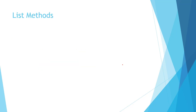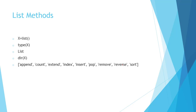Next, we will see list methods. There are different types of methods available in the list. To check which methods are available, we can use the dir() command. First, we create an empty list x using x = list(). After checking type(x), which returns 'list', we use dir(x) to find available methods such as append, count, extend, index, insert, pop, remove, reverse, sort, etc.